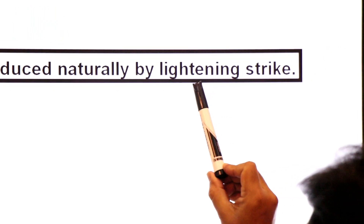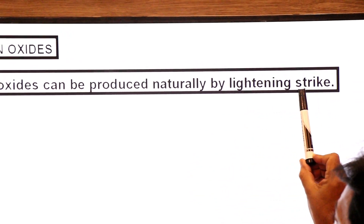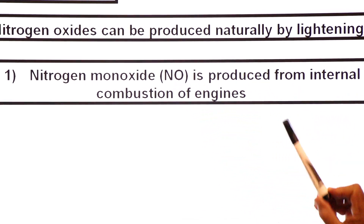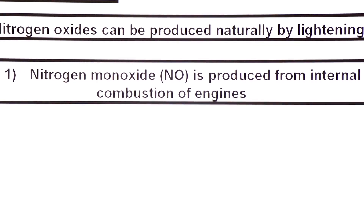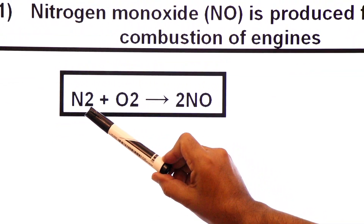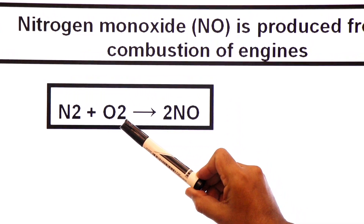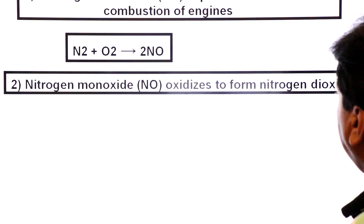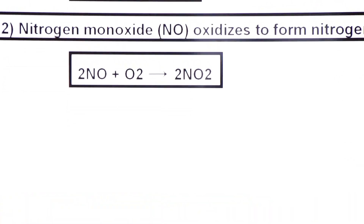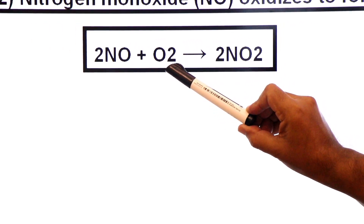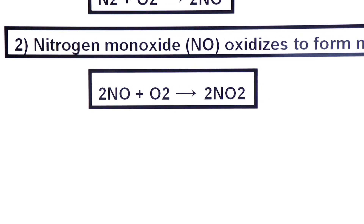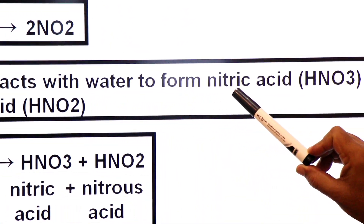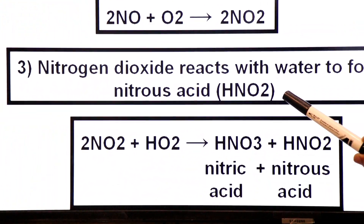Now nitrogen dioxide can be produced naturally by lightning strike. When lightning strike occurs in clouds, nitrogen monoxide is first produced from internal combustion or burning of engines — atmospheric nitrogen combines with molecular oxygen. Nitrogen monoxide is then oxidized to form nitrogen dioxide. Two molecules of nitrogen monoxide combine with molecular oxygen to create two molecules of nitrogen dioxide. In the third step, the nitrogen dioxide reacts with water of clouds to form nitric acid HNO3 and nitrous acid HNO2.